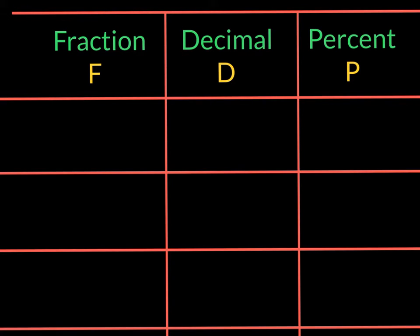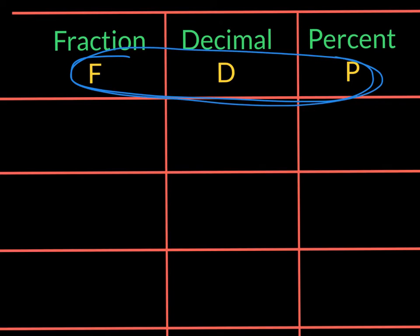We can make these changes easily by setting up a table with columns for fractions, decimals, and percents. We can remember this by thinking F, D, P, the first letters of each of these words.